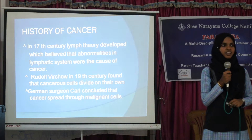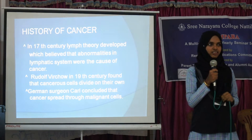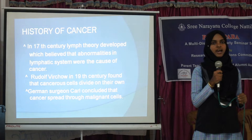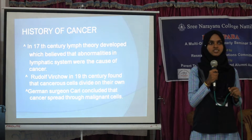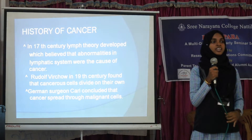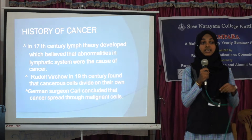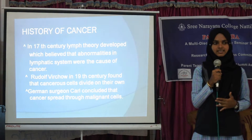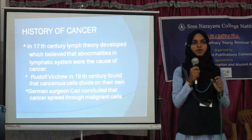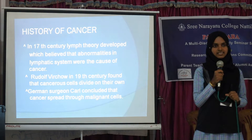History of cancer: in the 17th century, the lymphatic theory was developed, according to which abnormalities in the lymphatic system cause cancer. Then came the scientist Bussow, who identified that cancerous cells have the capacity to divide lymph cells. The scientist Carl Sagan proposed that cancerous cells spread through malignant cells.